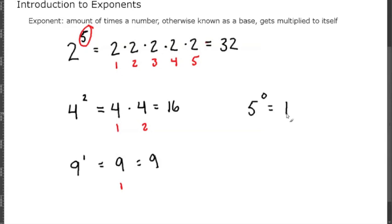4 to the 0 is 1, 6 to the 0 would be 1, 25 to the 0 would be 1. All of these are equal to 1. Just remember, any base to an exponent of 0 is always going to be the number 1.